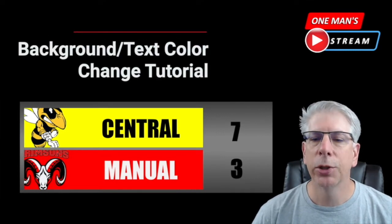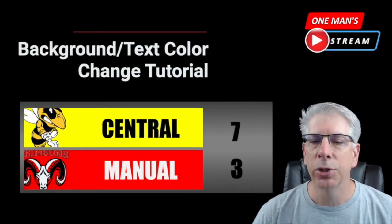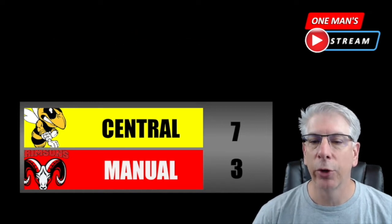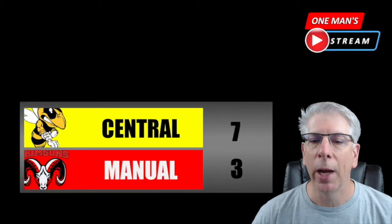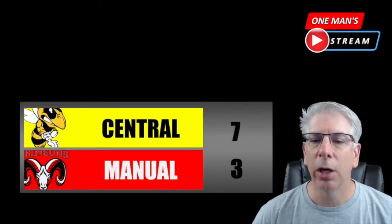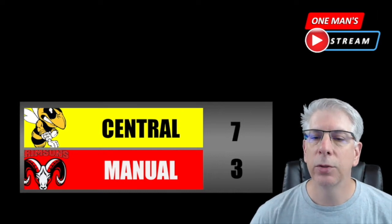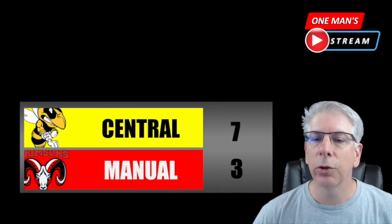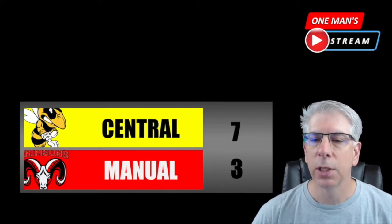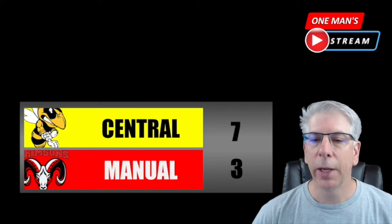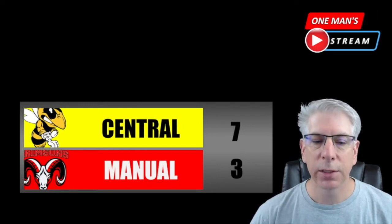What we're going to be able to do now with these background images using vMix UTC is change them rather quickly. We won't have to continue to go back into GT Title Designer and change these background colors — we'll actually be able to do this just by using the hexadecimal color designations for each one of these backgrounds. So it's going to make it very easy for us.